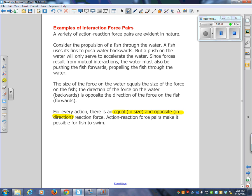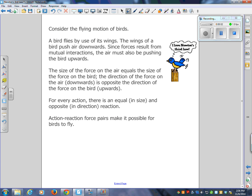Here's another example. Consider birds. A bird flies by use of its wings. The wings of a bird push air downwards. Since forces result from mutual interactions, the air must also be pushing the bird upwards. The size of the force on the air equals the size of the force on the bird. The direction of the force on the air downwards is opposite the direction of the force on the bird upwards. For every action, there's an equal in size and opposite in direction reaction. Newton's third law allows birds to fly.